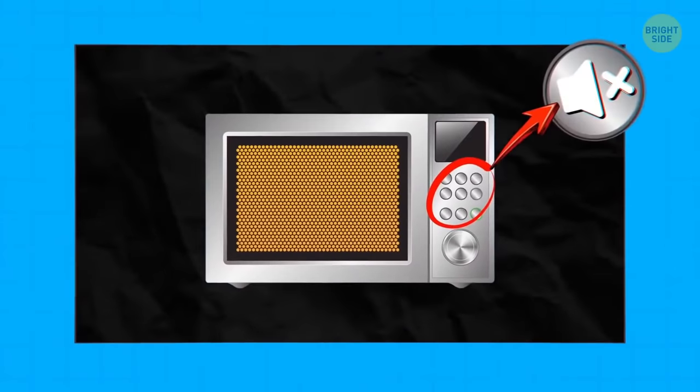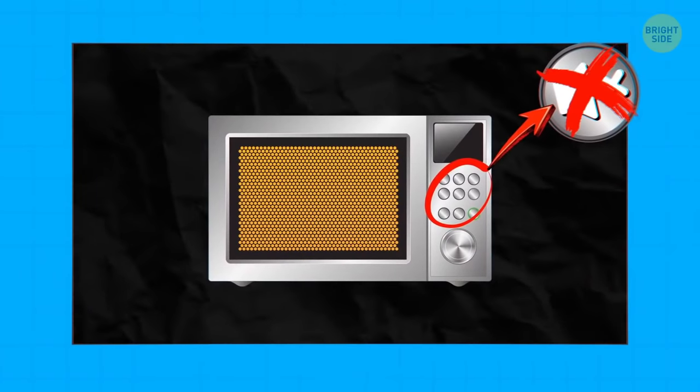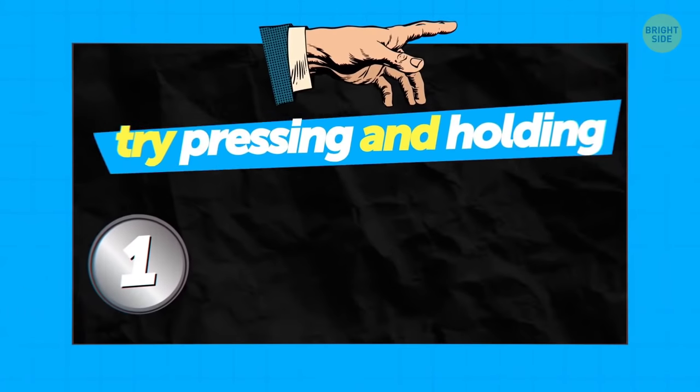To mute your annoying beeping microwave, look closely at the front panel for a sound button. It may have been there all along, just begging to be pressed. If there's no button, try pressing and holding 1, 0, stop or cancel. Will either result in turning off the beeping sounds or activating a lock feature. Of course, if your microwave doesn't have any mute function at all, you'll just have to keep running to stop the timer late at night.